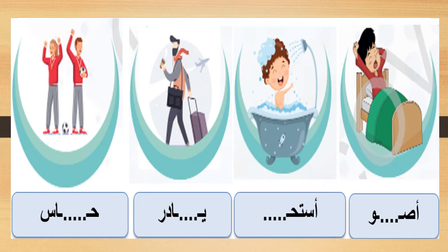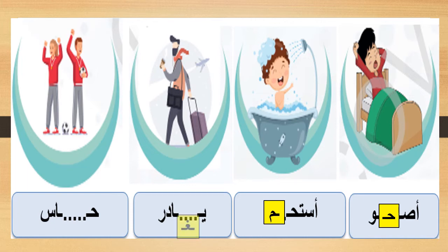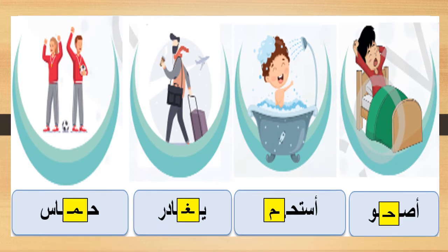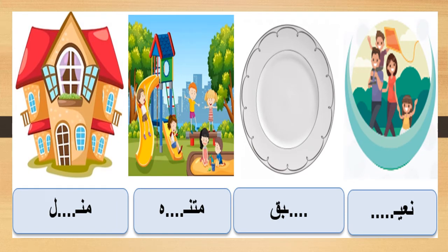أصح - الحرف الناقص: حاء. أستحم - الحرف الناقص: ميم. يغادر - الحرف الناقص: غين. حماس - الحرف الناقص: ميم. نعيم - الحرف الناقص: ميم.